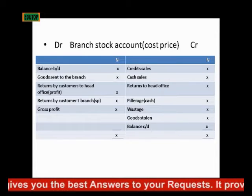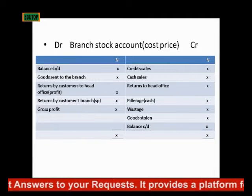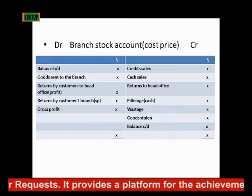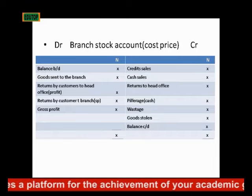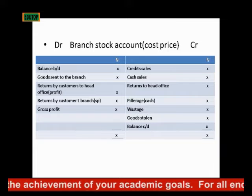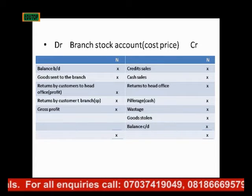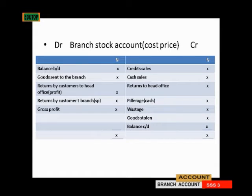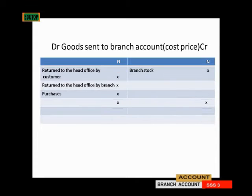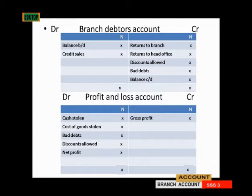This is the format for the branch stock account. We have the branch stock account, goods sent to customers, branch debtors account, and profit and loss. There is information posted on both the debit and credit sides. On the debit side we have the balance brought down, goods sent to branch, returns to customer, and returns by customers. Under the branch account we have cost price, since goods are sent to the branch at cost price. The profit and loss account is used to ascertain the net profit at the end of the day.